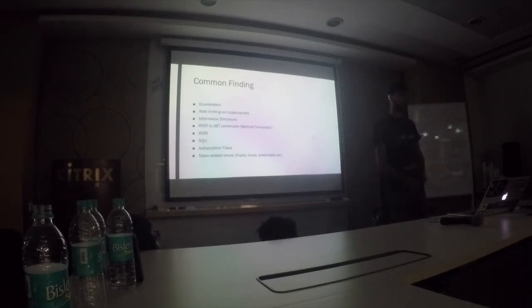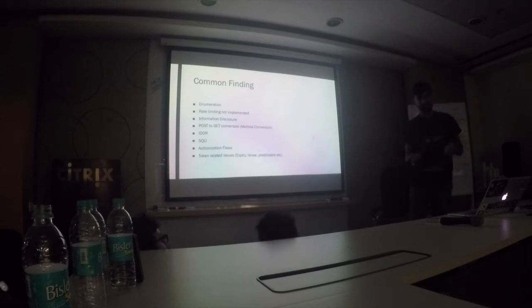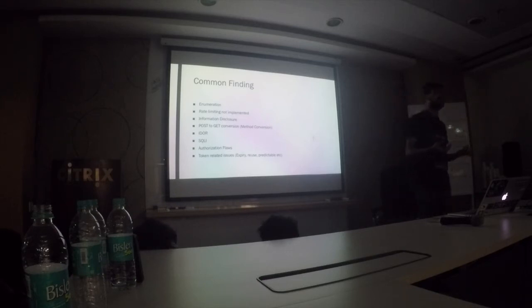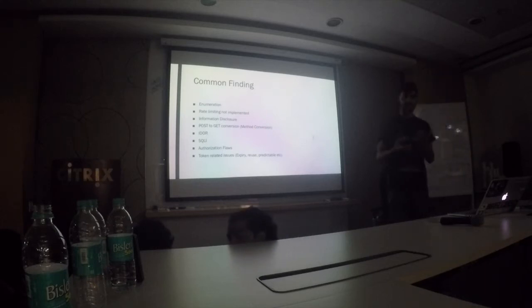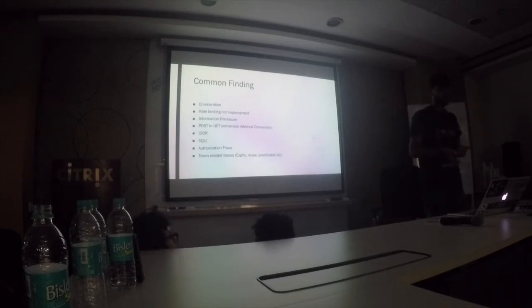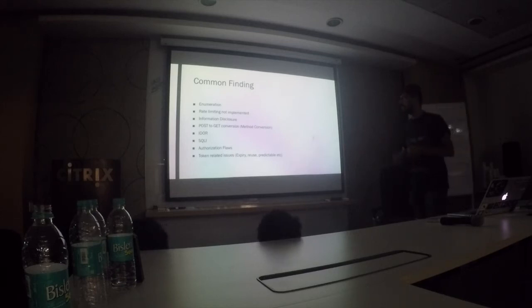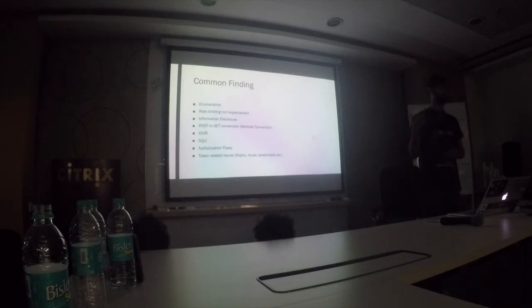The common findings that I usually find: one is enumeration — people say IDOR, insecure direct object reference — where you will get more data about some other user than yours. I have found many cases where the REST API endpoint does not have a token, so you can get this bug quite easily. Rate limiting is also a big issue in REST APIs.